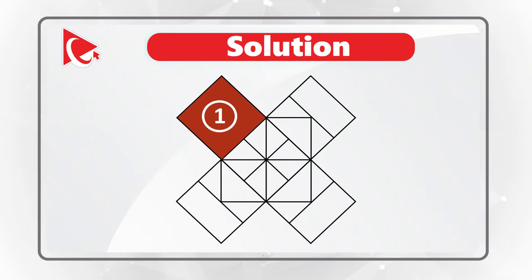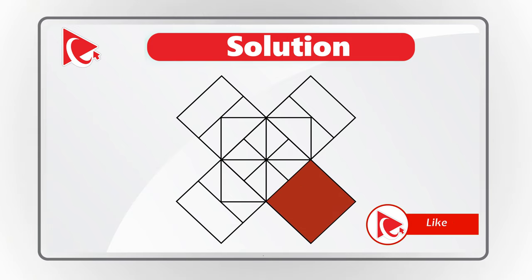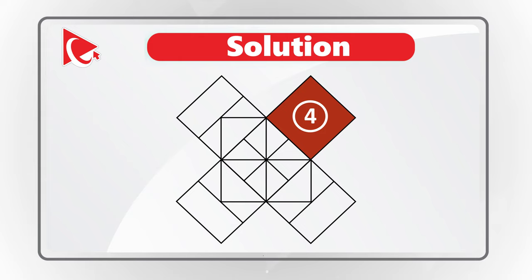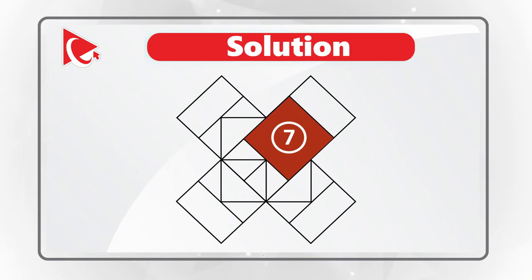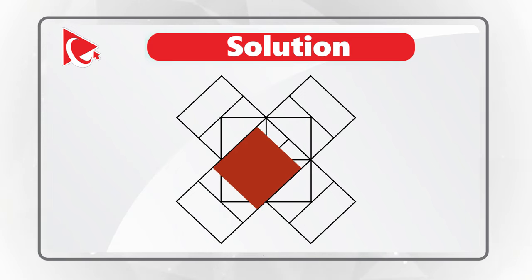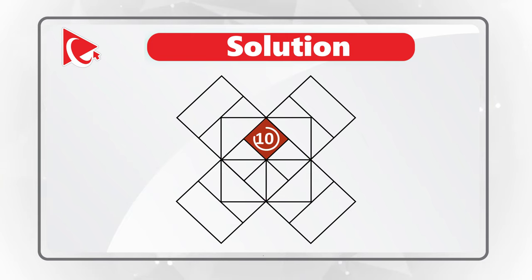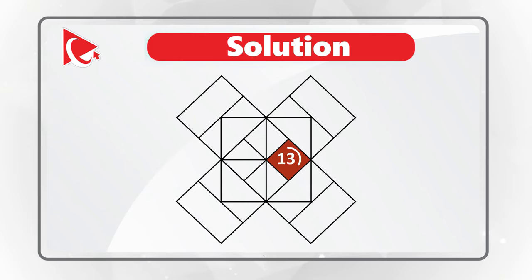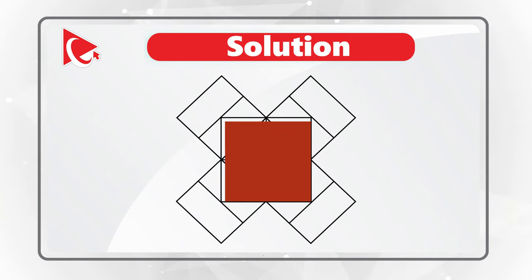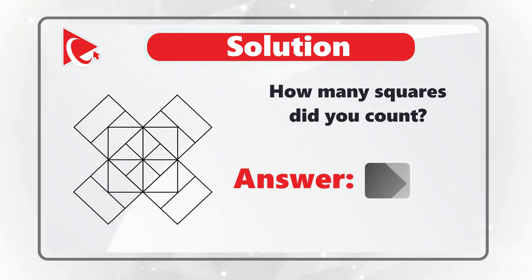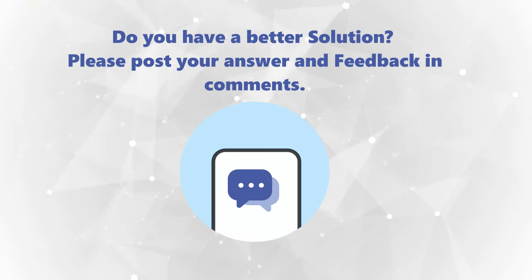Counting through the squares: one, two, three, four, five, six, seven, eight, nine, ten, eleven, twelve, thirteen, fourteen, fifteen, sixteen, seventeen, and eighteen. Do you see any additional ones? It is totally possible that I missed one of the squares — if you do see any additional ones, please make sure to post them in comments.